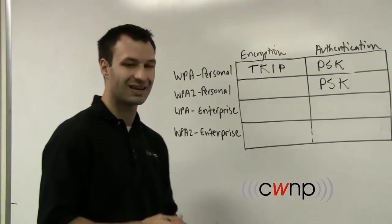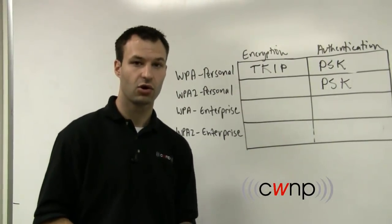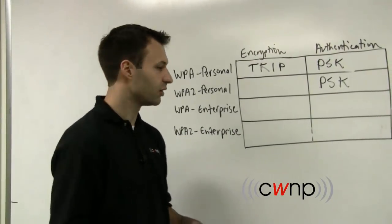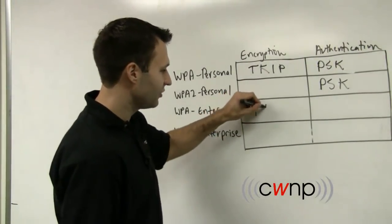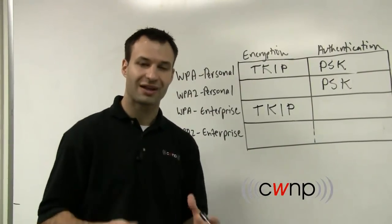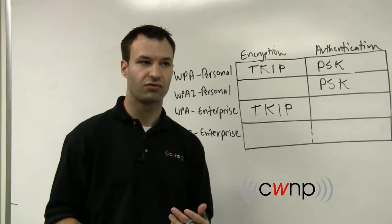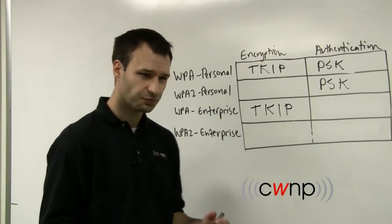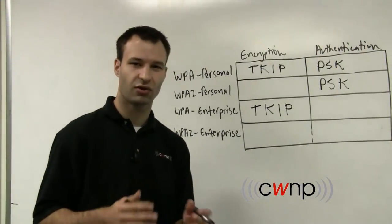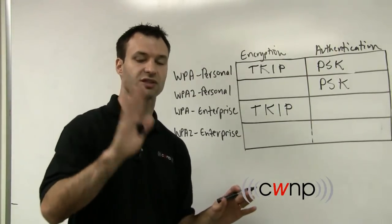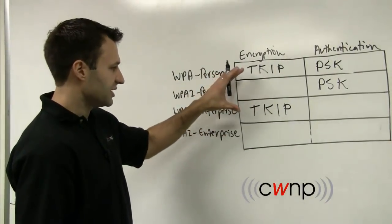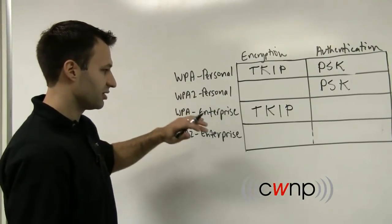TKIP uses the RC4 encryption algorithm, which is the same algorithm used by WEP, but with several enhancements. Since it was a stopgap solution, they knew it wasn't going to be endlessly future-proof. They corrected it in the ways they could, knowing that at some point it would expire. Today it almost has — it's still a reliable security method, but you start to see some of the cracks, where they're basically just patching up the problems from WEP. TKIP is used with both WPA Personal and WPA Enterprise.